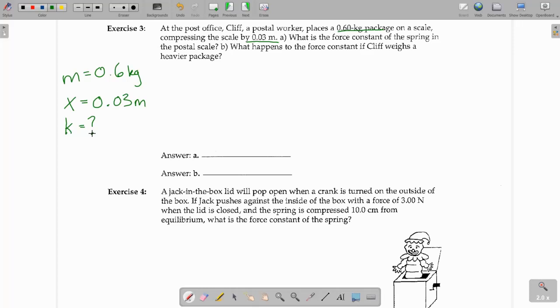So, this is kind of a two-step problem here. So, you're probably thinking, well, it would make sense to use this equation, F equals KX, Hooke's law. Because we have X, the compression. And then we're solving for K, but we don't have the force.